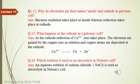Question number 13: what happens at the cathode in a galvanic cell? At the cathode, reduction of copper ions takes place and the electrons are gained by copper ions from the solution. The copper atoms are then deposited at the cathode.